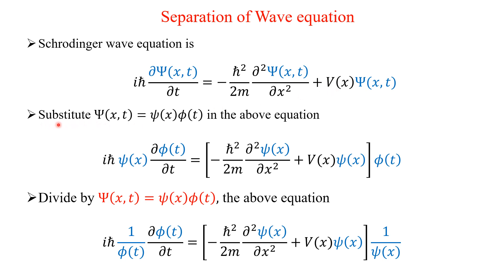Now we substitute and separate the wave function into two parts. That means capital Ψ(X,T) equals small ψ(X) multiplied by φ(T), substituted into the above equation. Here ψ depends only on X and φ depends only on T, so we are separating the wave function into a position part and a time part.